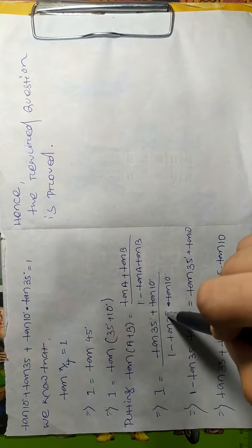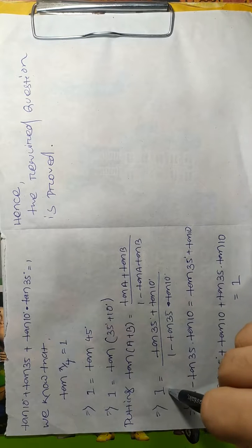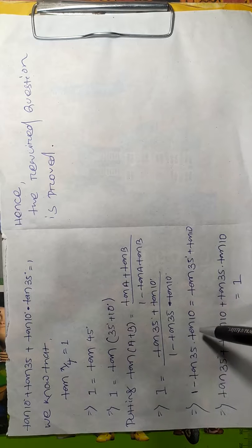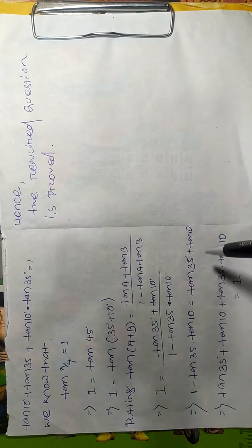This denominator term is multiplying by 1 and converted to 1 - tan 35° × tan 10° = tan 35° + tan 10°.